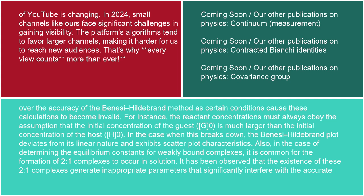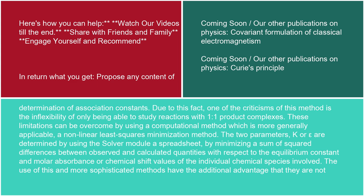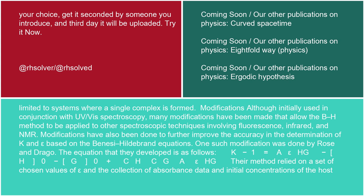In the case of determining equilibrium constants for weakly bound complexes, it is common for the formation of 2:1 complexes to occur in solution. It has been observed that these 2:1 complexes generate inappropriate parameters that significantly interfere with the accurate determination of association constants. One criticism of this method is its inflexibility in only being able to study reactions with 1:1 product complexes. These limitations can be overcome by using a nonlinear least squares minimization method, where K and ε are determined using a solver spreadsheet by minimizing the sum of squared differences between observed and calculated quantities. This approach is not limited to systems where a single complex is formed.